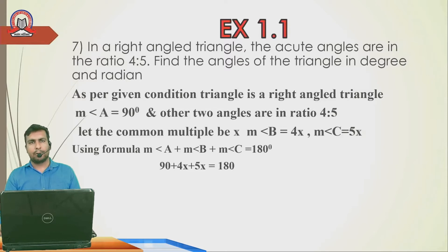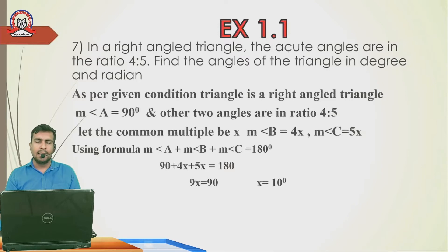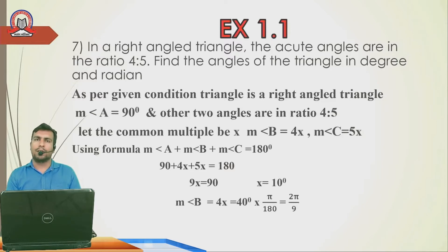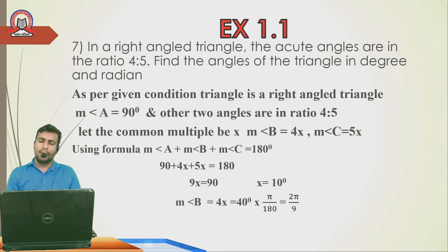180 − 90 = 90, and 4x + 5x = 9x, so 9x = 90, giving x = 10°. Now Angle B = 4x = 4 × 10 = 40°. Converting to radian: 40 × π/180 — the zeros cancel, and applying the 2-table: 4/2 = 2 and 18/2 = 9, so Angle B = 2π/9 radian.